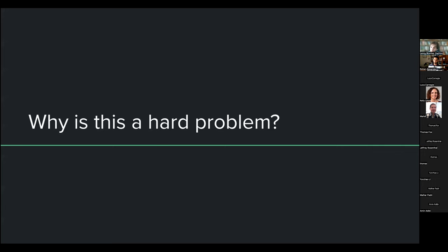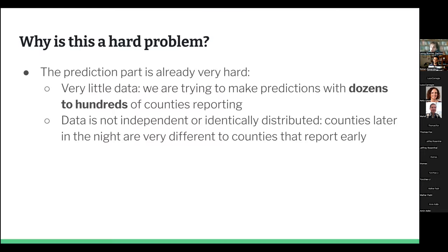Why is this a hard problem? Prediction is always hard, but there are particular reasons this is especially hard. We generally have very little data early in the night — we may only have dozens of counties. Later we may have hundreds, and there are four and a half thousand counties in the US total. The crucial aspect is that the data we're getting is not independent or identically distributed, which is one of the core assumptions for a lot of off-the-shelf statistics.